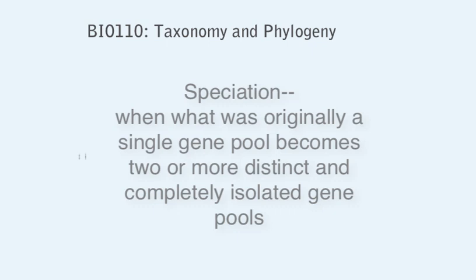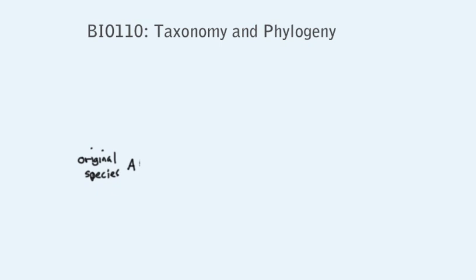Now in a nutshell this is how new species form. Let's diagram this and call the original species A and the two distinct species you find after a long period of separation, B and C.